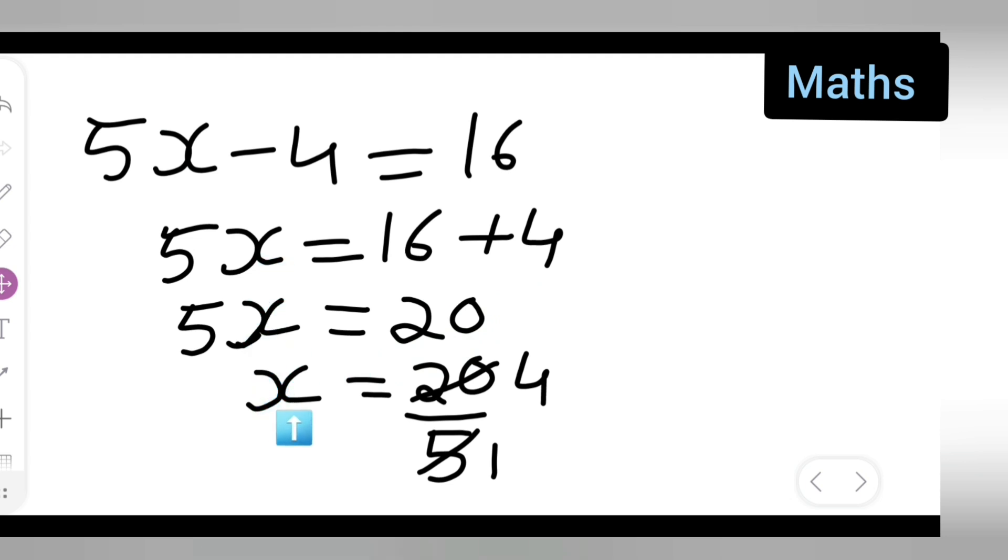5x write it as it is. x is equal to 20. This 5 will go down. Then 5 ones are 5, 5 fours are 20. Cancel it. So therefore the value of x what we got is nothing but 4.